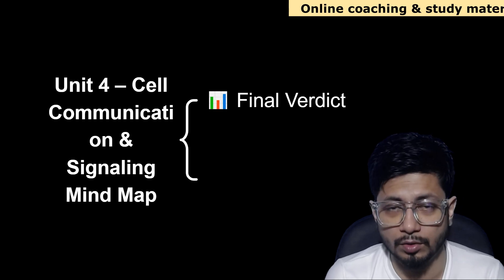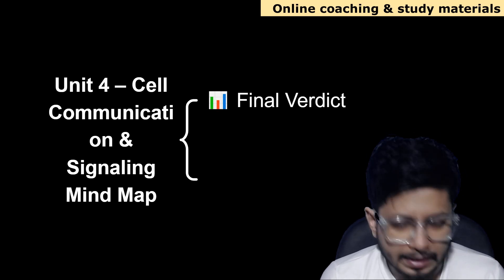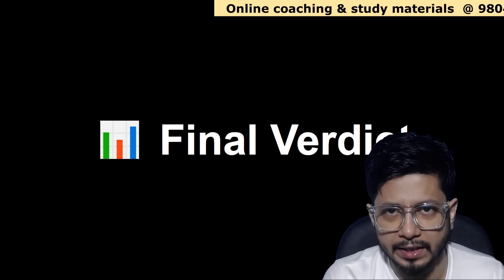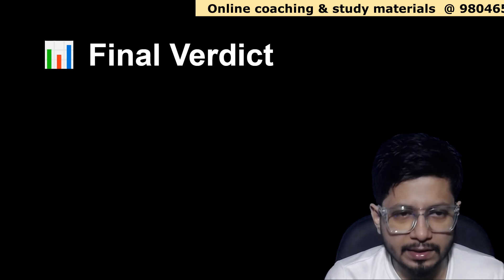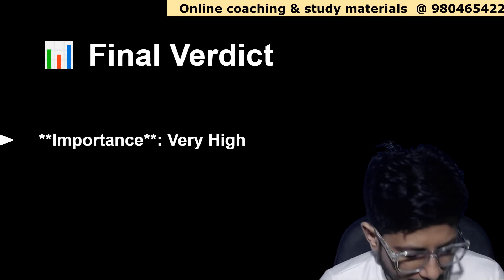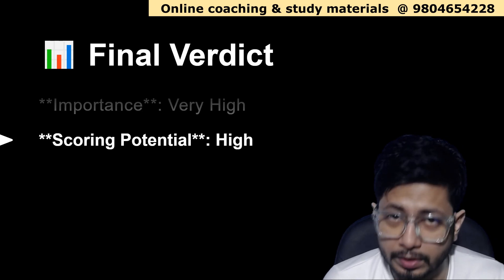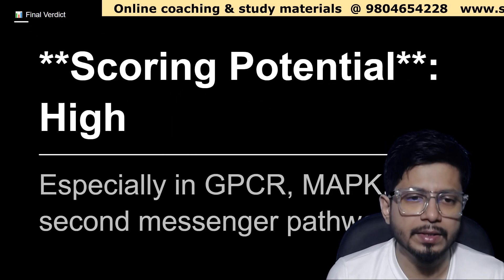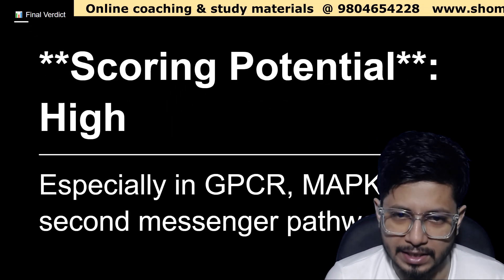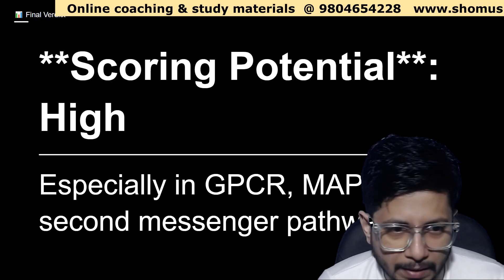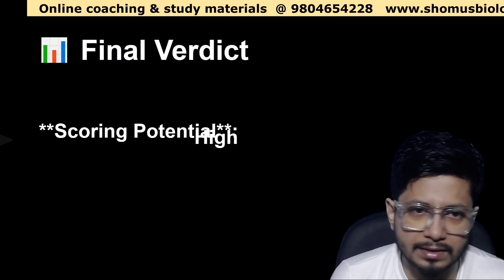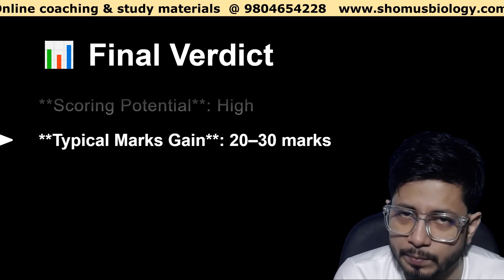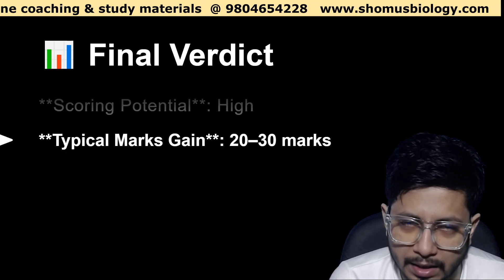We will first talk about the overall final verdict on this particular chapter, then discuss the different repeated topics. Starting with the verdict: the importance level of this unit is very high. The scoring potential from Unit 4 is also very high, especially in the signaling pathways like GPCR, MAP kinase pathway, and second messenger pathways. Typical marks to gain in this chapter, if prepared properly, are 20 to 30 marks without any issue.